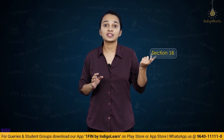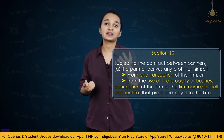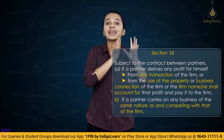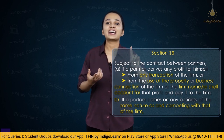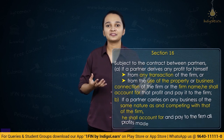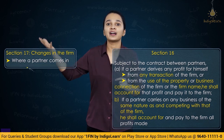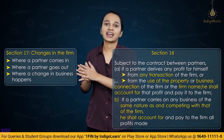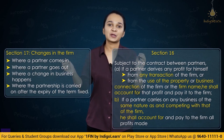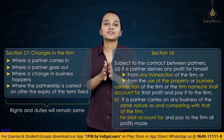Section 16 deals with a situation where a partner uses business connections or the firm name to make personal profit, or carries on a competing business for personal gain — he must account for that profit and pay it to the firm. Section 17 talks about changes — a partner coming in, a partner going out, change in business activities, or a fixed-period partnership continuing after expiry. In all these situations, the rights and duties of the partners will remain the same as they were before the change.